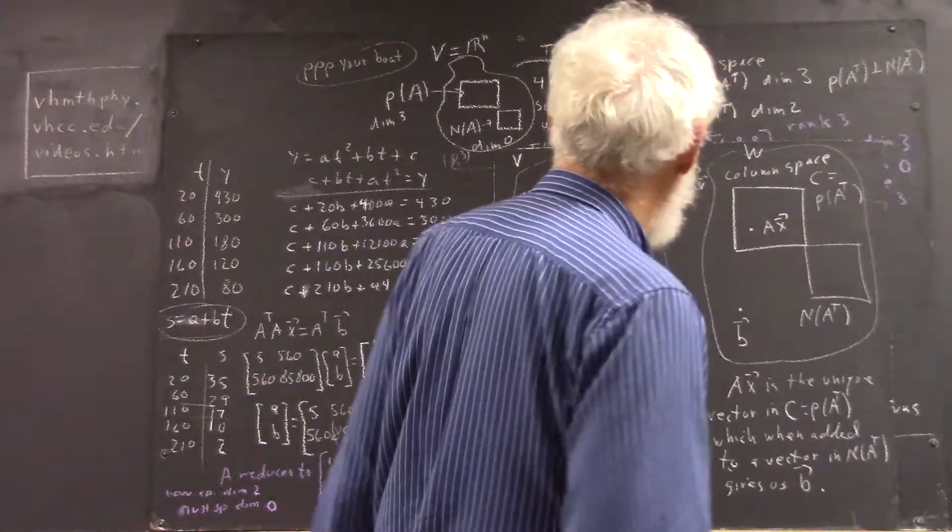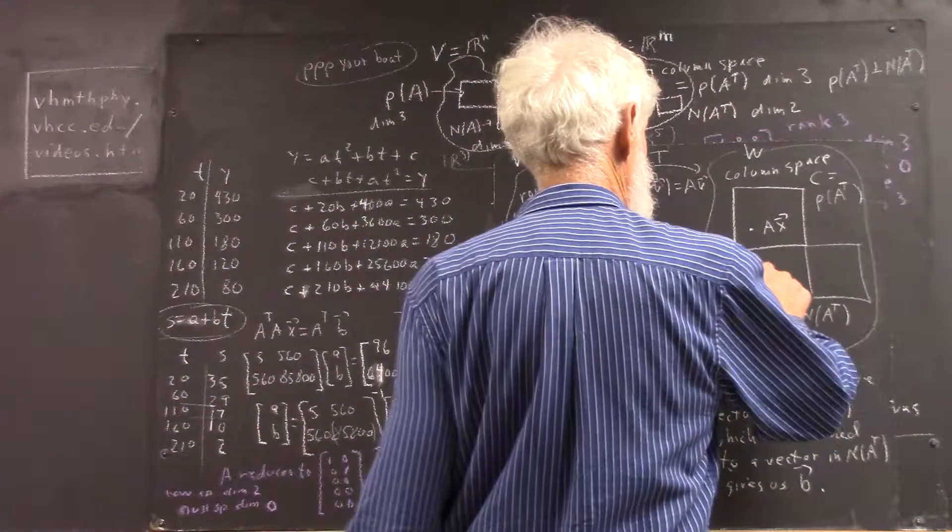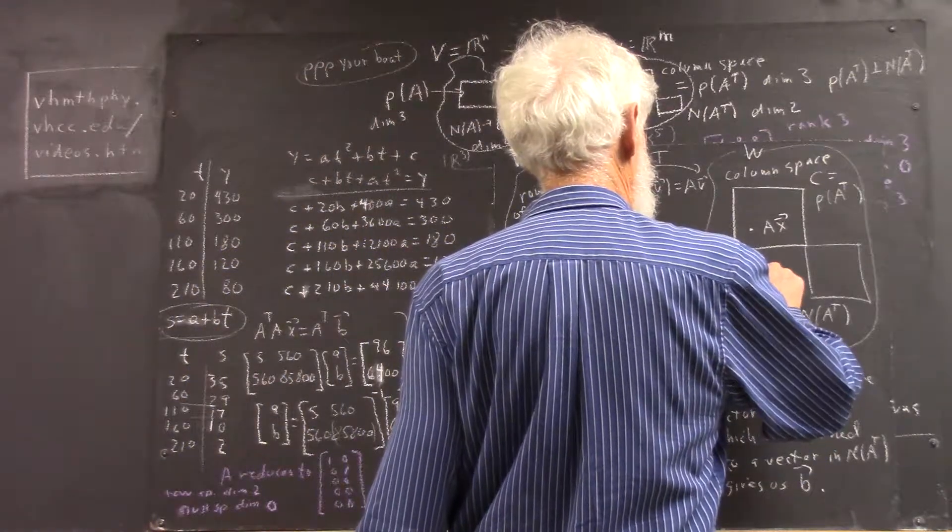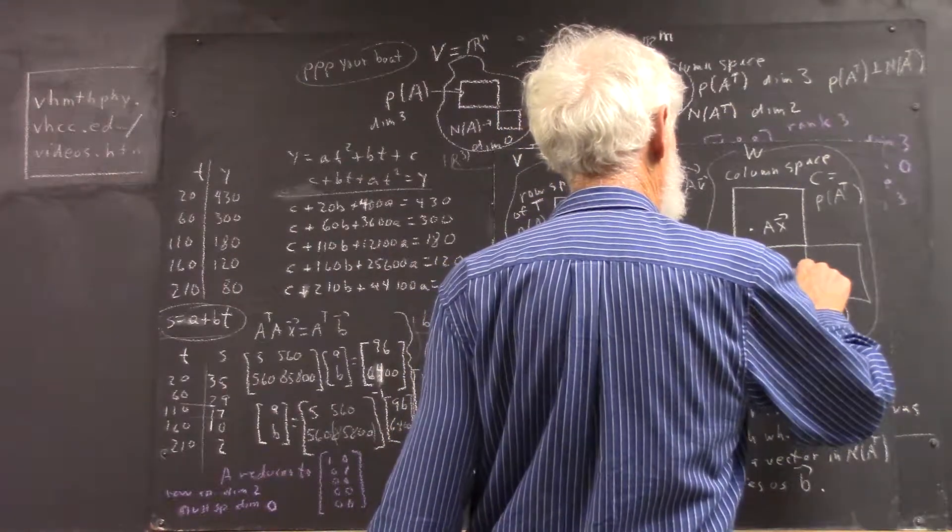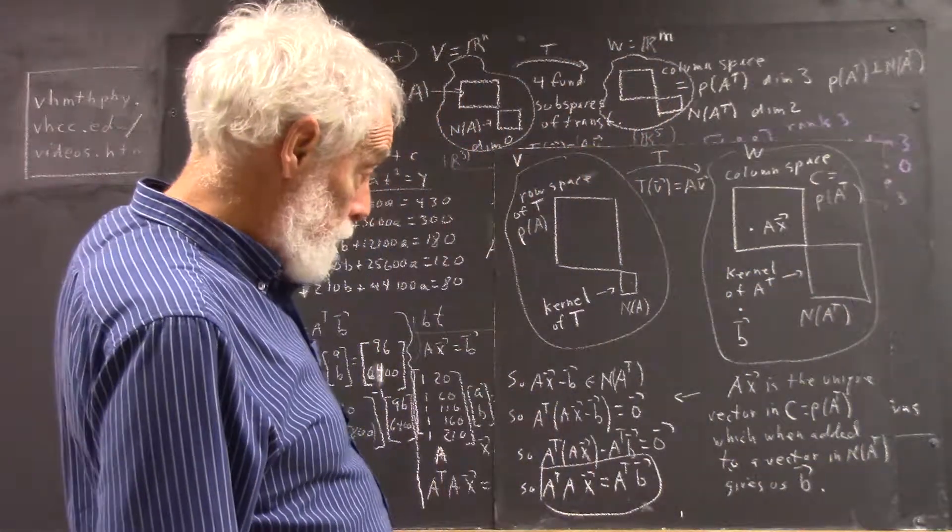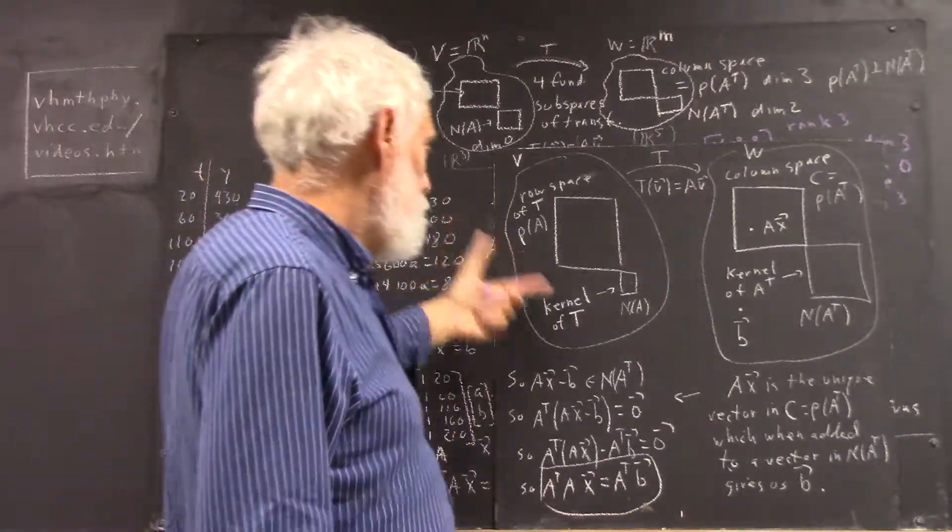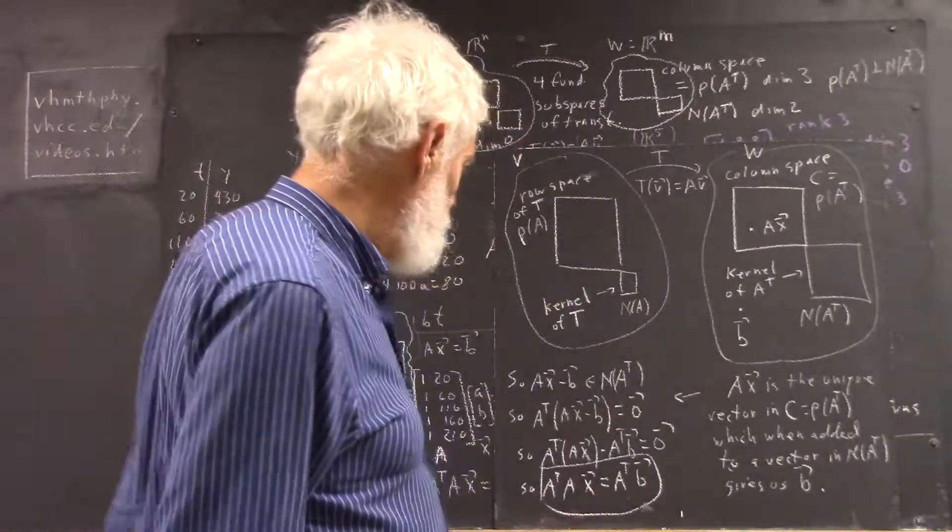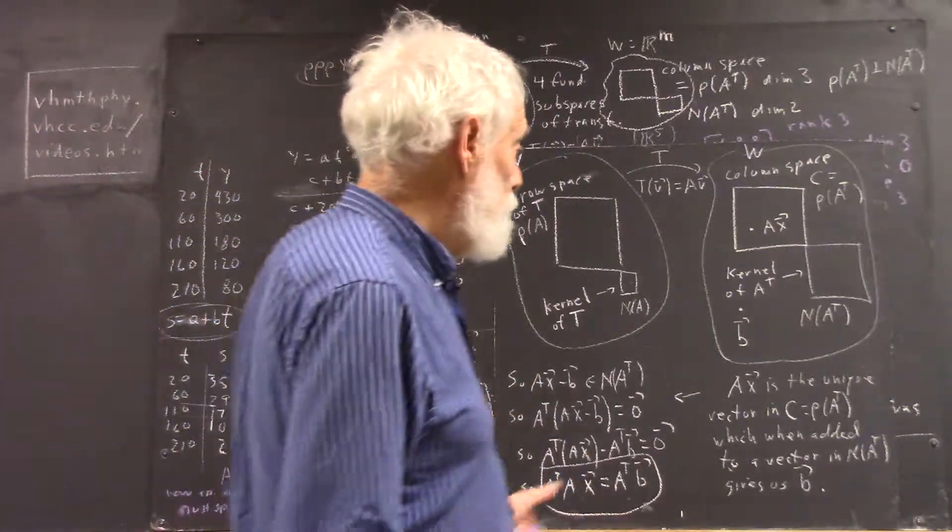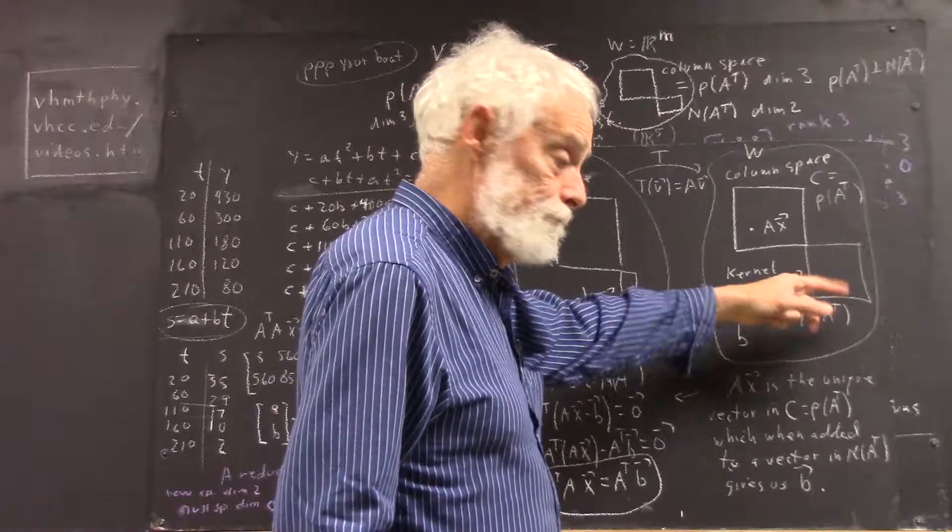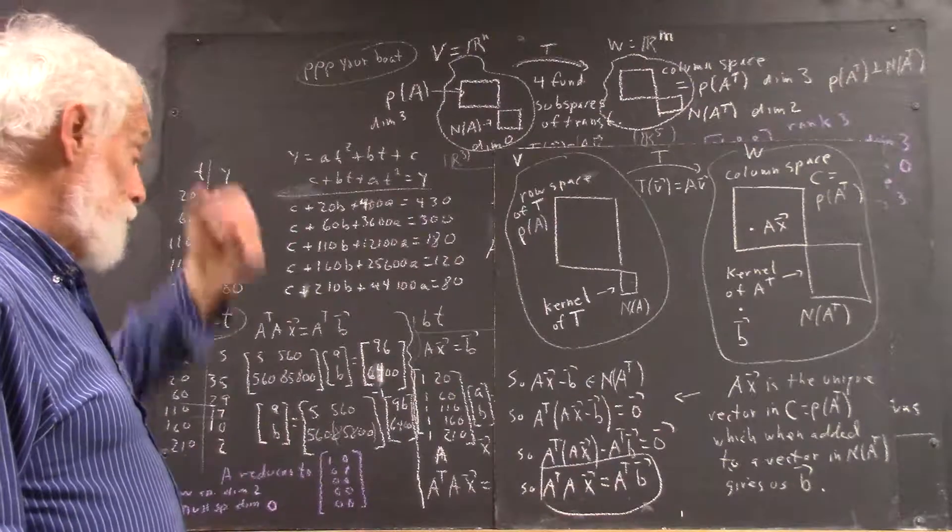And this is the kernel of A transpose. It's sometimes also referred to as the left kernel of the matrix A or the transformation A. Because you multiply it on the left by the matrix A, you would get zero, anything in this null space. But don't worry too much about that. We won't be looking at it in this course.